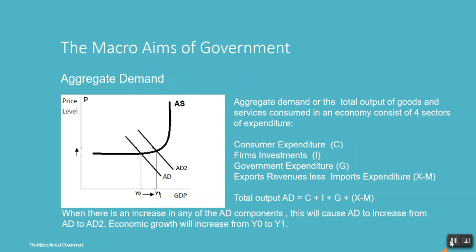Aggregate demand is the total output of goods and services consumed in an economy. It consists of four sectors of expenditure: consumer expenditure (C), firm's investments (I), government expenditure (G), and exports revenues less imports expenditure (X-M). Total output, or aggregate demand, equals C + I + G + (X-M). When there is an increase in any of the AD components, this will cause AD to increase from AD1 to AD2, and economic growth will increase from Y0 to Y1.